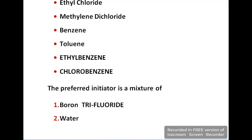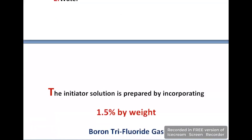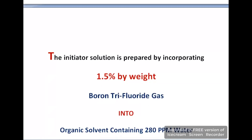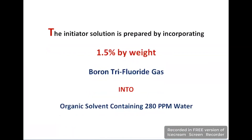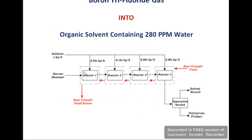Another initiator is also used, in which boron trifluoride (BF3) and water are included. This initiator solution is prepared by dissolving 1.5 weight percent of boron trifluoride gas into an organic solvent containing 280 ppm water. That mixture is called the initiator. Here in this diagram you can see the initiator, which is used in this reaction in addition to the styrene monomer — so these two are the reactants of this process.